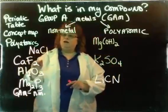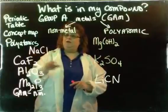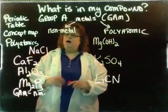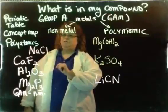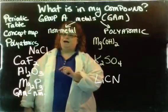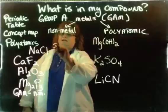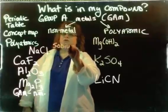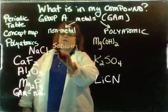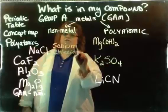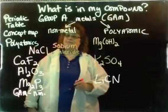When I come to this first compound, I notice that it's a group A metal attached to a nonmetal. On your concept map, it says name the metal, and then name the nonmetal with an I. So Na, name the metal, is sodium, and then name the nonmetal with an I. So I'm going to change the ending of chlorine to chloride.